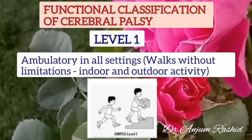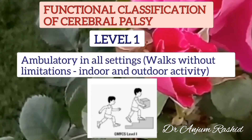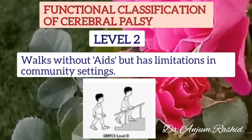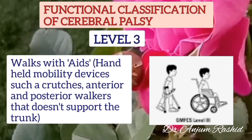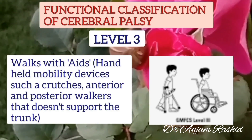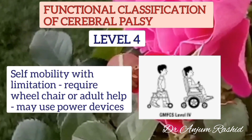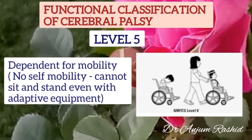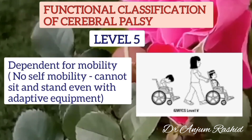In the functional classification of cerebral palsy, Level 1: the child walks without limitation in all settings. Level 2: the child can walk without aids but has limitation in community settings. Level 3: the child walks with handheld mobility devices such as crutches or walkers that don't support the trunk. Level 4: self-mobility with limitation; the child requires a wheelchair or adult help and may use power devices. Level 5: the child is dependent for mobility, with no self-mobility and cannot sit or stand even with adaptive equipment.